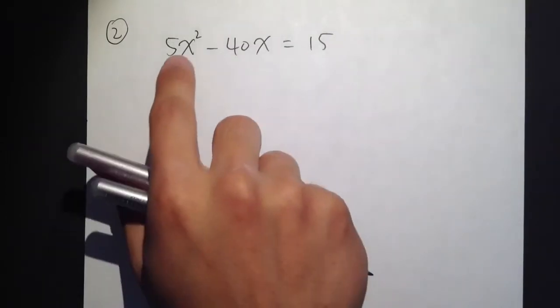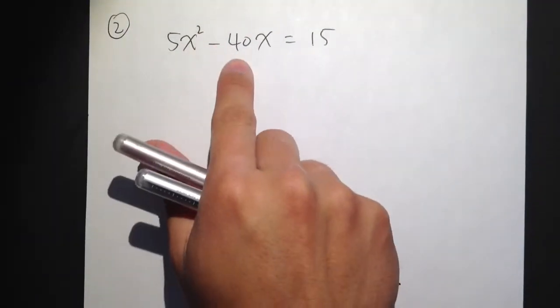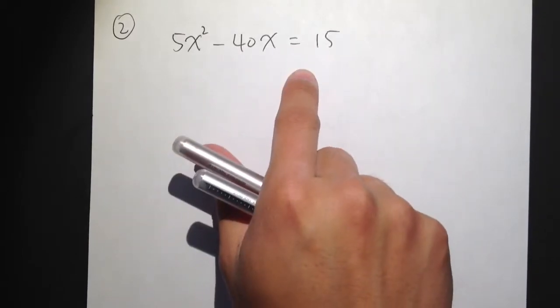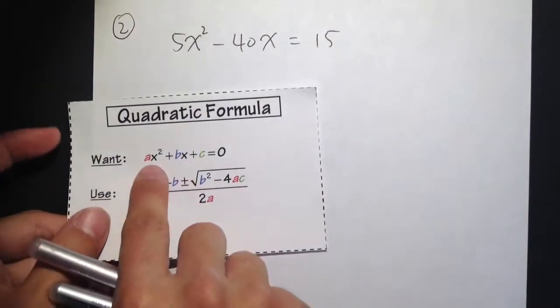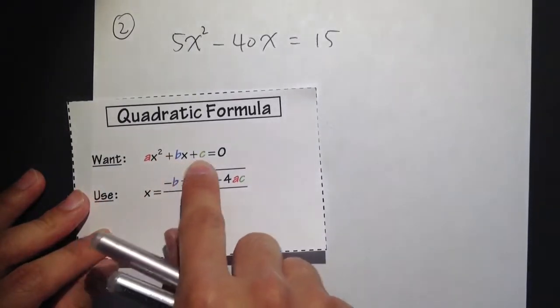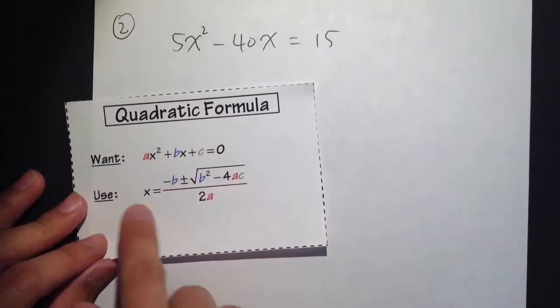Let's look at example number 2. We have 5x² - 40x = 15. In order for us to use the quadratic formula, we have to make sure that we have the standard form on the left-hand side, ax² + bx + c = 0, in order for this to work.